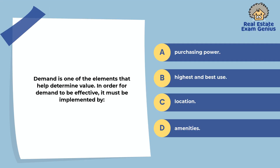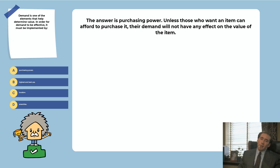Demand is one of the elements that help determine value. In order for demand to be effective, it must be implemented by: purchasing power, highest and best use, location, or amenities. The answer is purchasing power. Unless those who want an item can afford to purchase it, their demand will not have any effect on the value of the item.